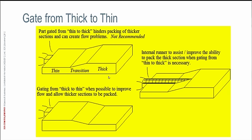Here's what I would call a Band-Aid solution: we've added a blind runner to the part geometry to help filling and packing. But what I don't like about that is I'm adding a basically useless feature to the part geometry from a functional standpoint just to aid manufacturability. Really, the best thing to do is switch the orientation around — if you have a transition from thick to thin, simply make sure you're always gating into the thickest sections of your part geometry.